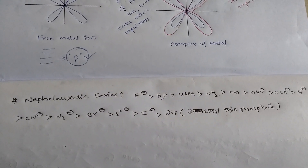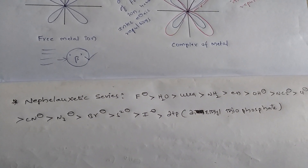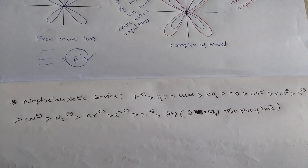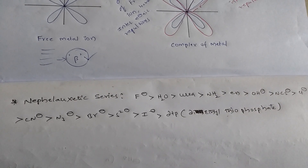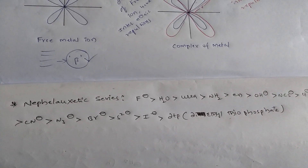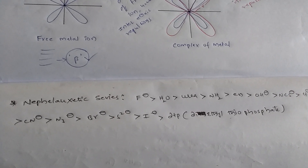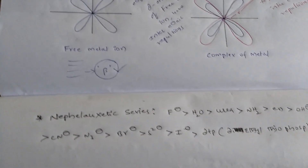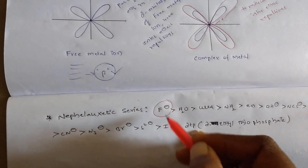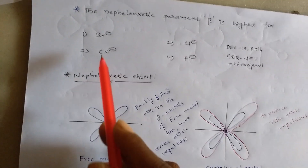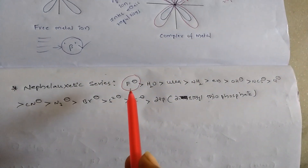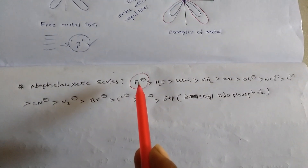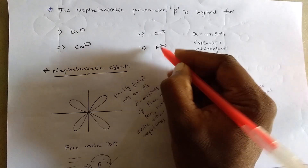In this series, the strongest nephelaxitic beta parameter ligands are F⁻, H₂O, urea, and so on. According to this series, the nephelaxitic parameter beta is highest for the F⁻ ion. In the given options — Br⁻, Cl⁻, CN⁻, and F⁻ — when you look at the series, F⁻ has the highest beta nephelaxitic parameter. So the answer is F⁻.